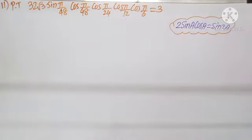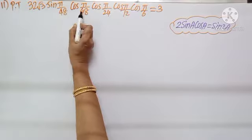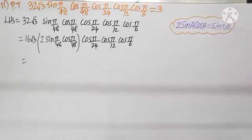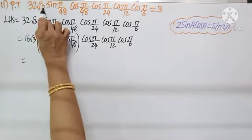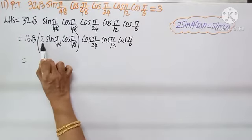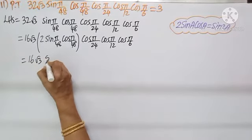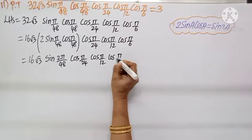Question number 11: prove that 32√3 into sin(π/48) cos(π/48) cos(π/24) cos(π/12) cos(π/6) equals 3. Looking at the problem, the very first pair sin and cos have the same angle. Recalling the formula sin 2a equals 2 sin a cos a. LHS: write 32√3 as 16√3 into 2, and apply to get 16√3 into sin(2π/48), then copy the remaining terms.